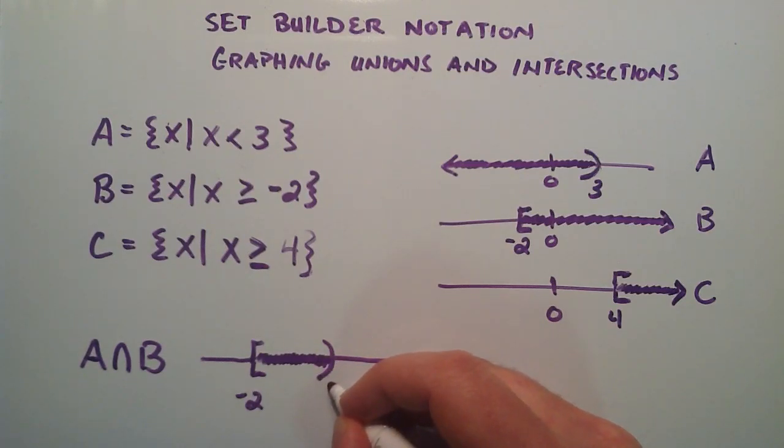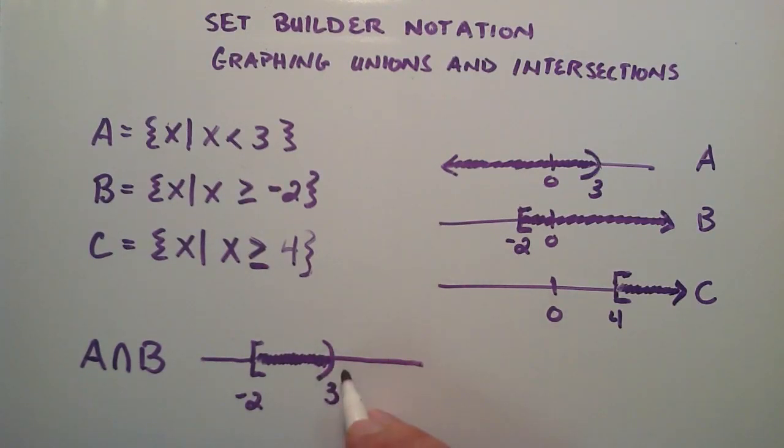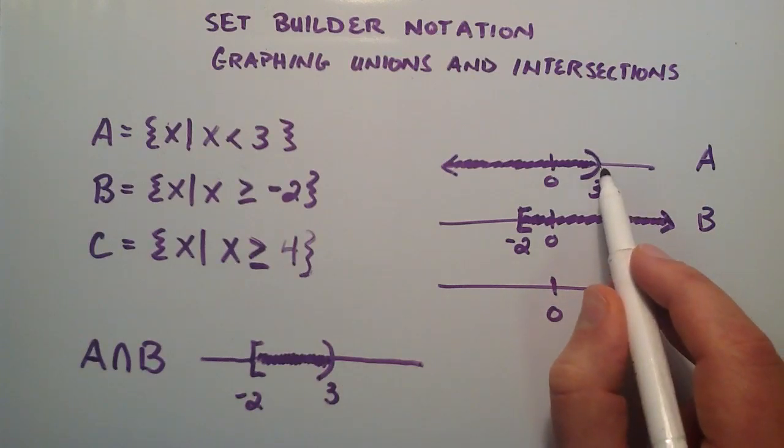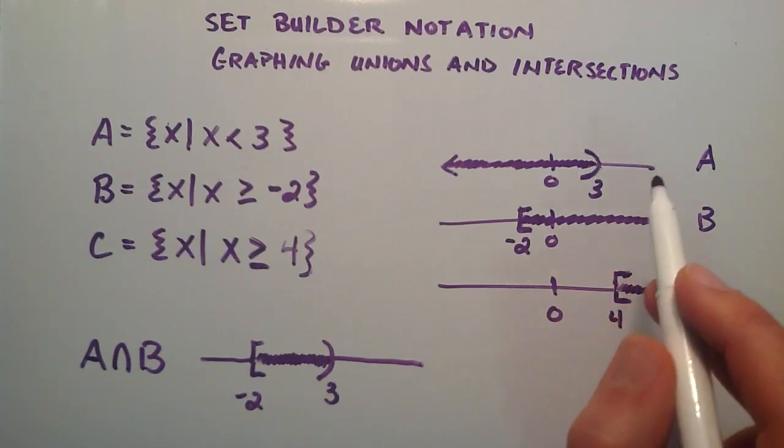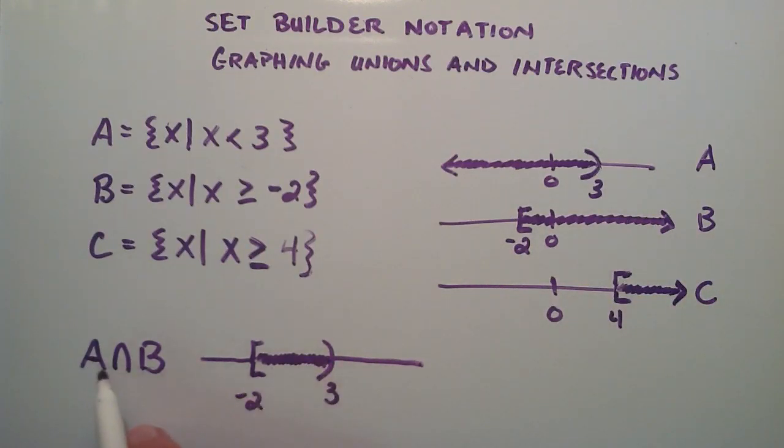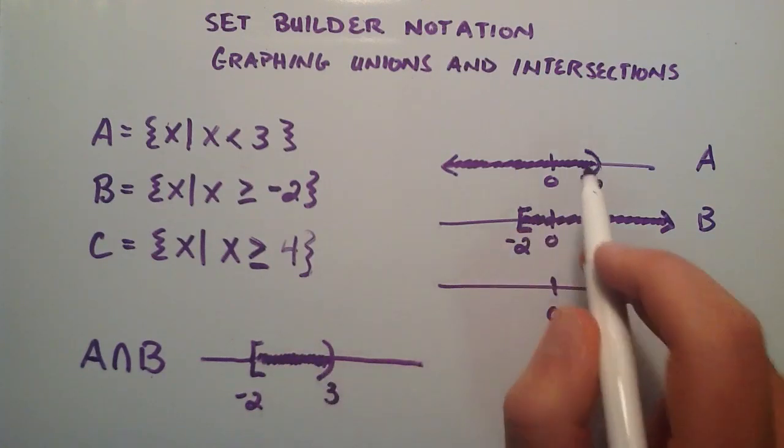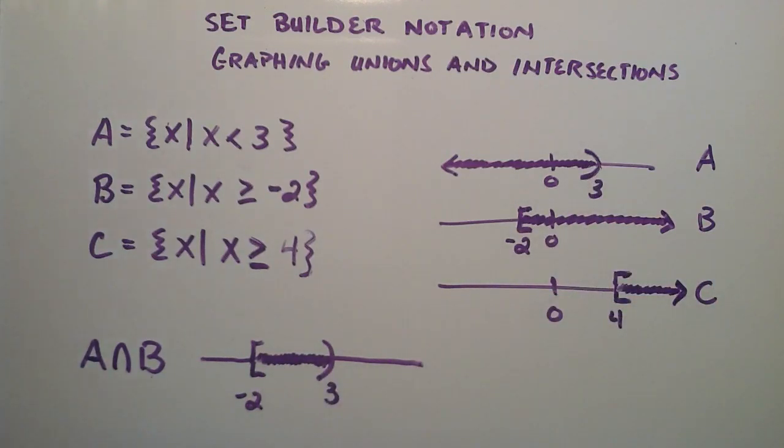That stops when we get up to the value 3. We do our little half circle once again to show that it's not including 3, but it goes all the way up as close as we can to the value 3. From then on, A does not include any more elements. So this is A intersect B graphed on a number line.